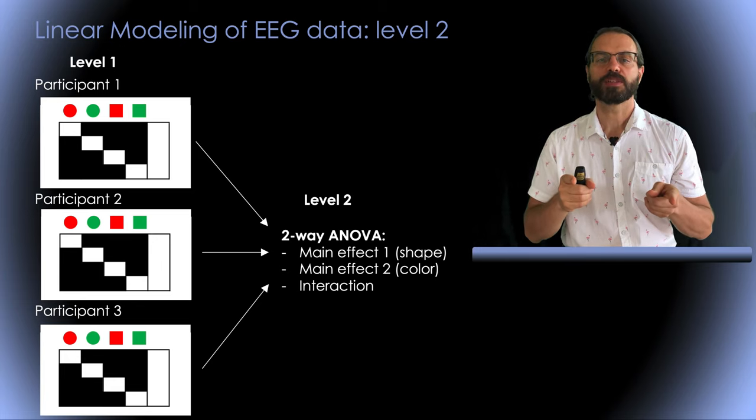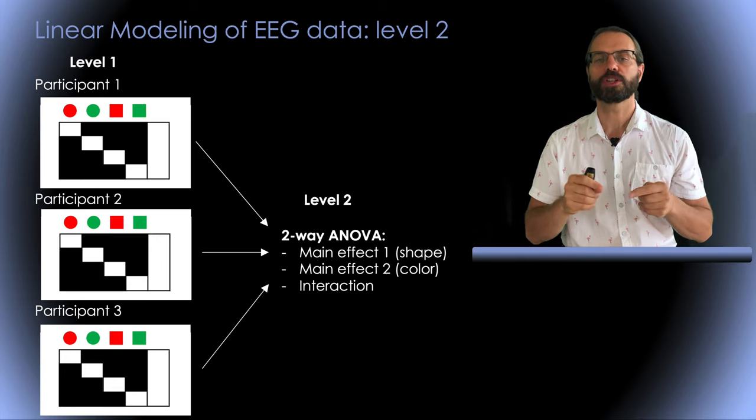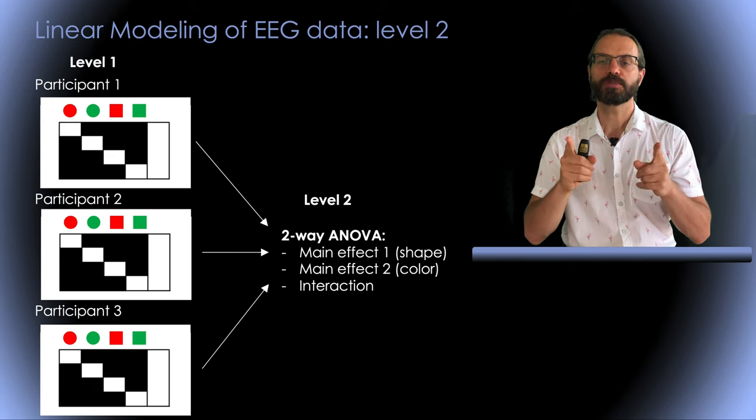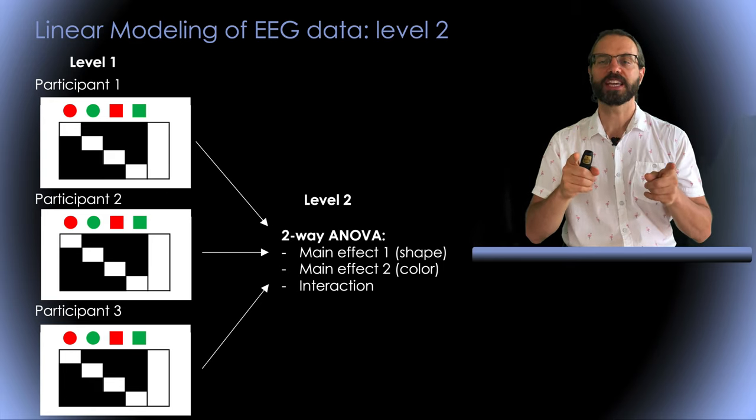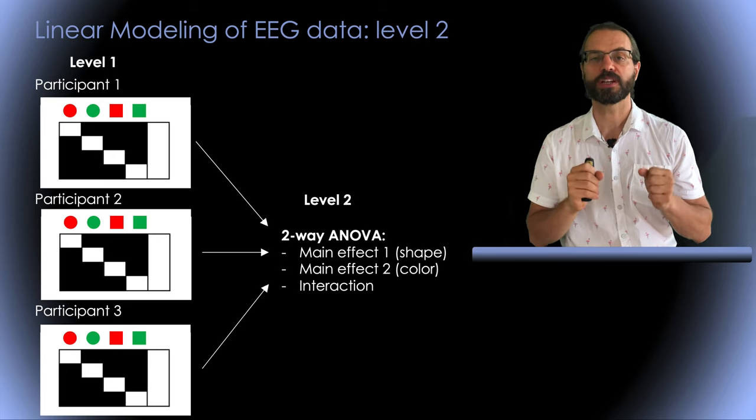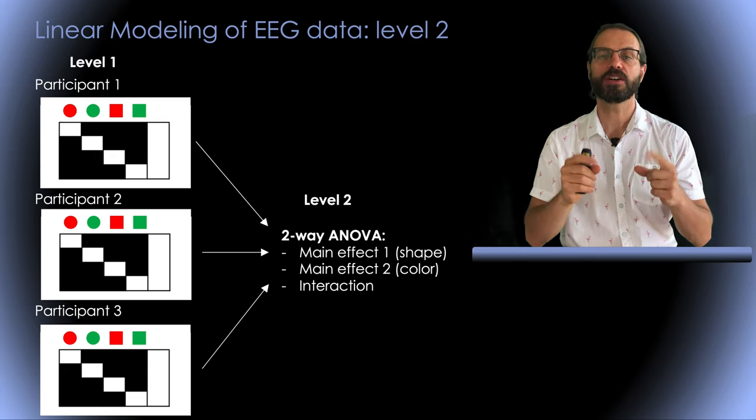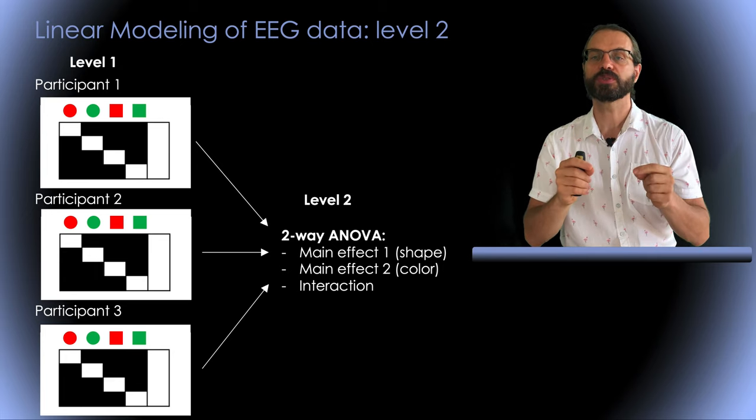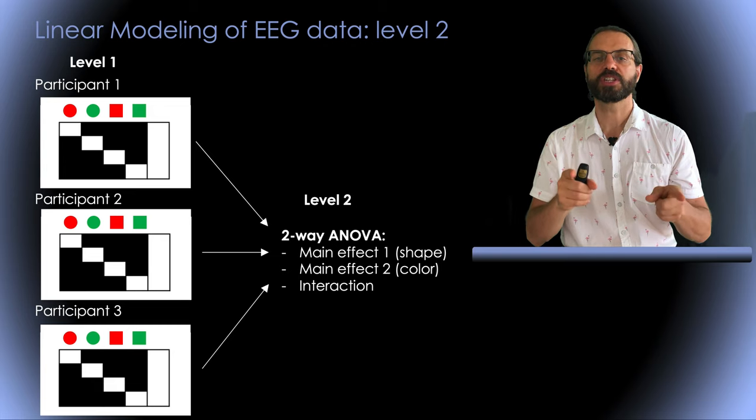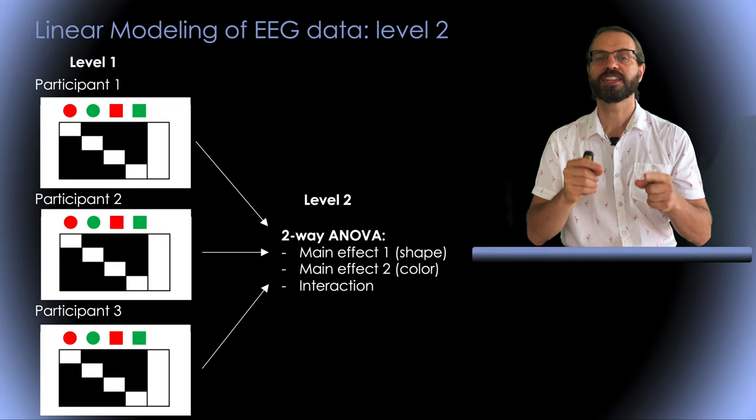In this specific case, we can perform a two-way repeated measure ANOVA or the equivalent EGLM design. The first main effect will indicate the influence of shape on the EEG data. The second main effect will indicate the influence of color and the interaction turns possible interaction between shape and color.